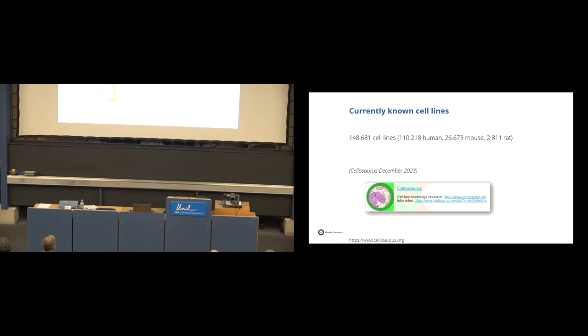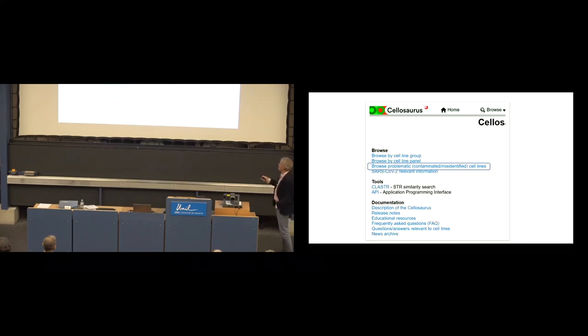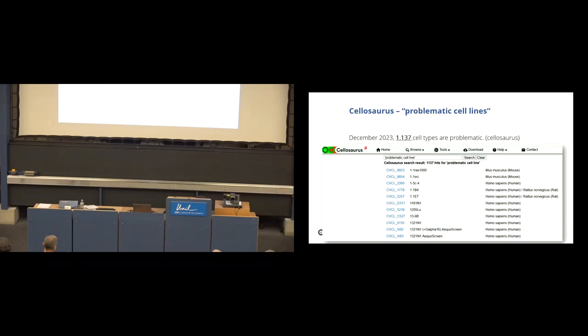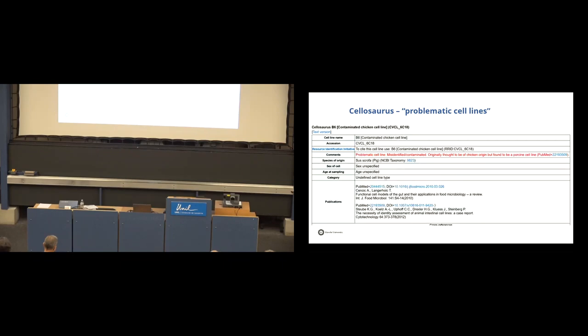And then, we refer to the Cellosaurus database where we have the problematic cell lines. We have seen this already. It's already in the menu. And when you go to the, you get a whole list of the problematic cell lines where you can check of your cell, whether your cell is problematic. And that is really flagged, clearly flagged in the Cellosaurus database.